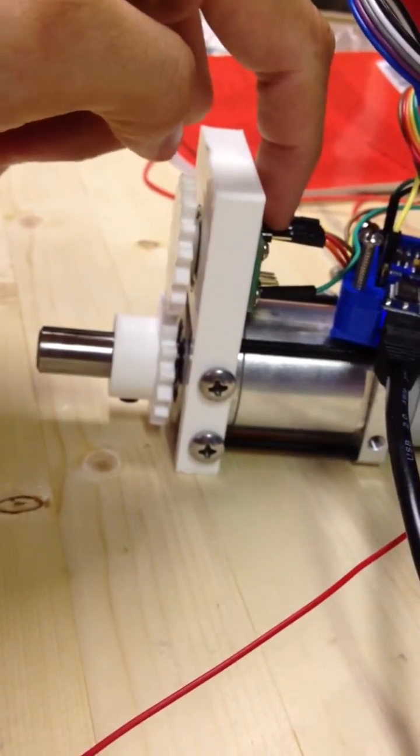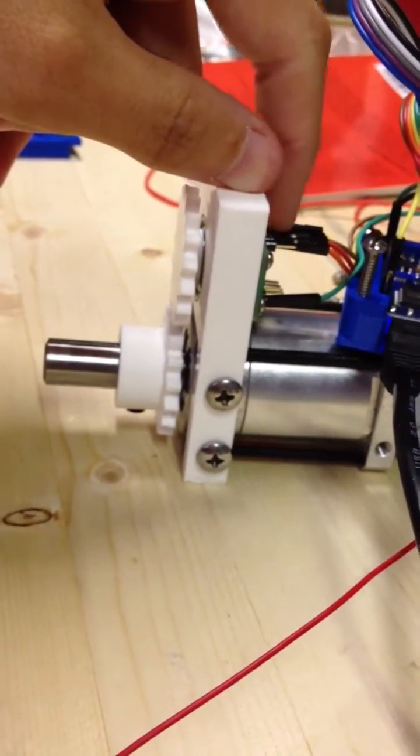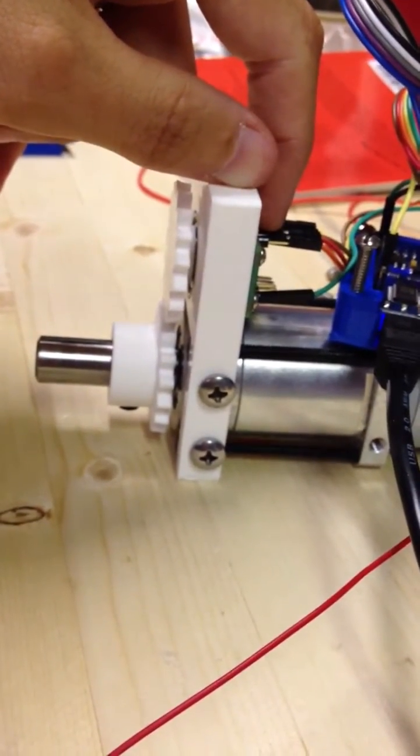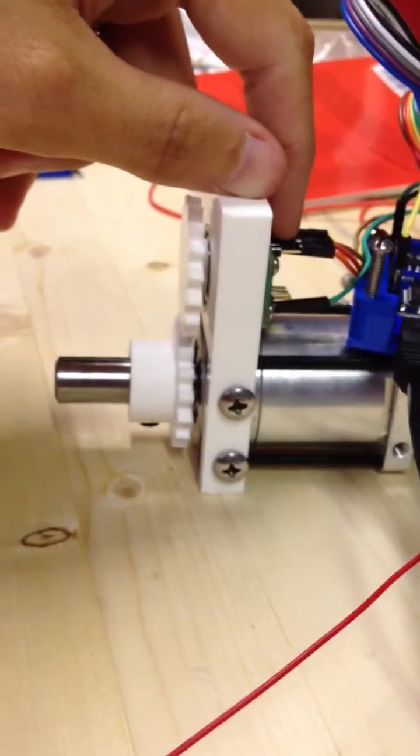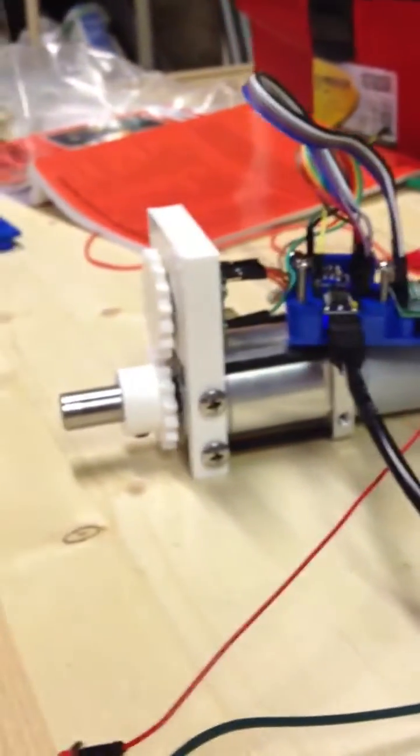And so this board, there's an AS5040 chip inside that, and it reads that magnet and gets absolute position from it. So you can see the whole motor there.